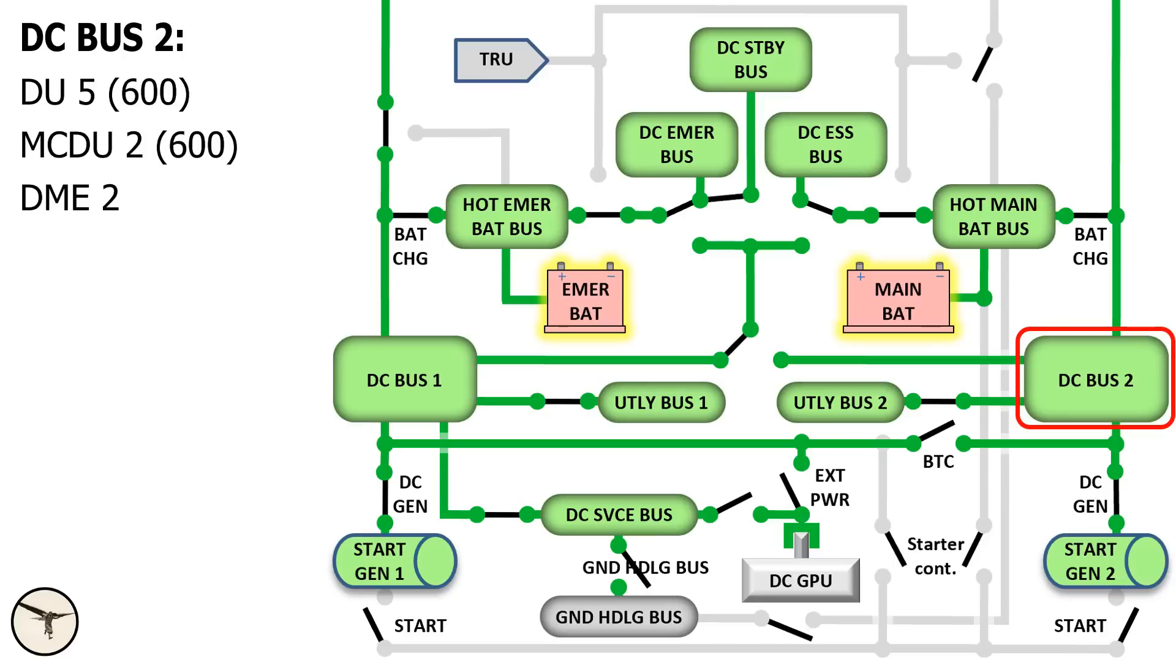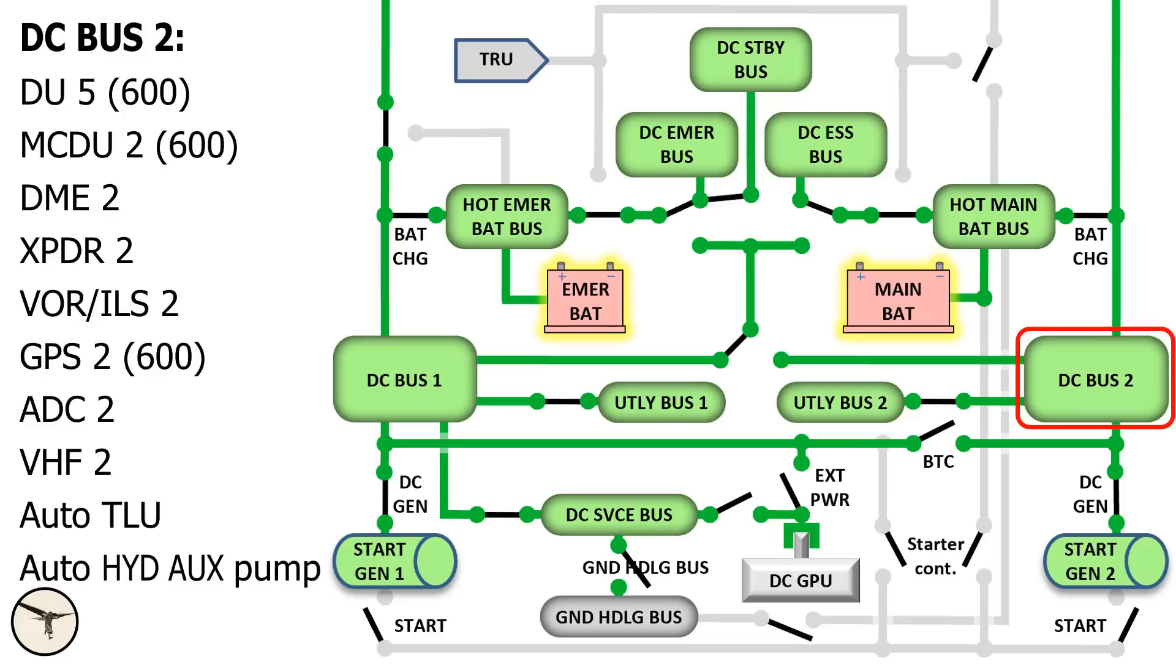DC bus two: display unit five, also for the 600. And almost everything with a number two label. MCDU2, DME2, transponder 2, VOR ILS2, GPS2, air data computer 2, affecting first officer speed and altitude. VHF radio number 2. Plus autothrottle TLU and hydraulic blue pump.